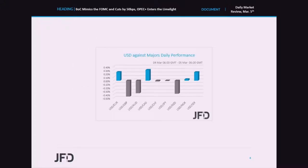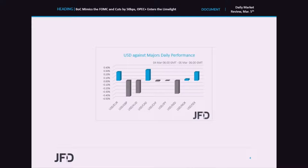As always, let's start with the performance of the greenback. The dollar traded mixed against the other G10 currencies on Wednesday and during the Asian morning Thursday. It gained versus the Canadian dollar, the euro, and the Swedish krona, while it underperformed against the pound, the kiwi, and the Aussie. It was found virtually unchanged versus the Swiss franc, the yen, and the Norwegian krona. The strengthening of risk-linked currencies like the Aussie and kiwi, combined with the relative weakness of safe havens like the Swiss franc and yen, suggests that risk appetite remains supported.